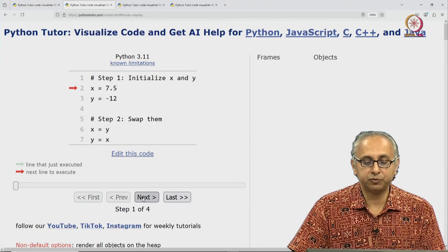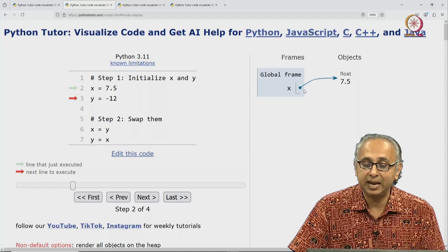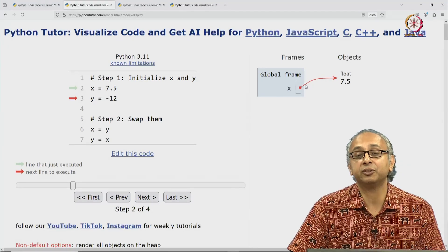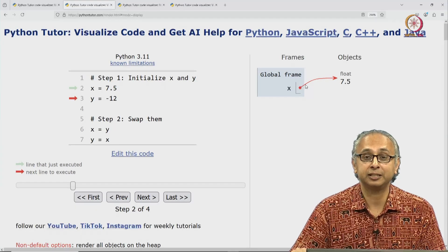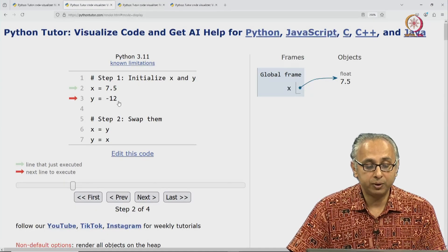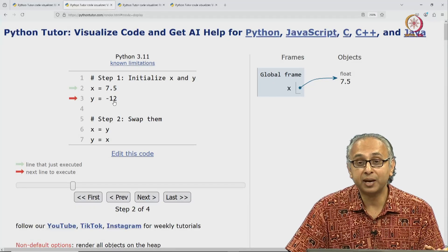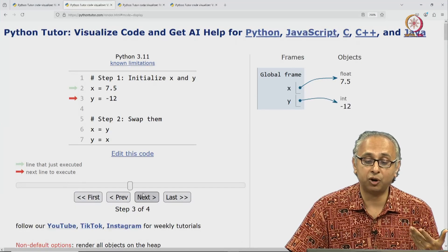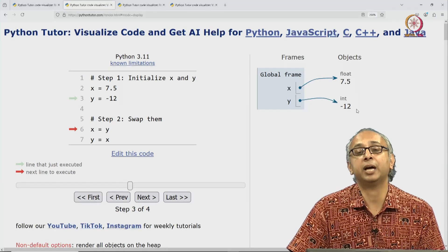So we click on next and of course this creates this float object 7.5 and it labels that object with the variable X. I am using the non-default visualization to make it clear. Now we are ready to do this second assignment statement. Evaluate the right hand side. That is the integer object minus 12 and assign the variable Y to that object.